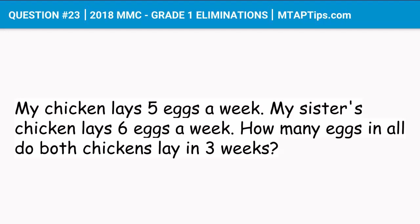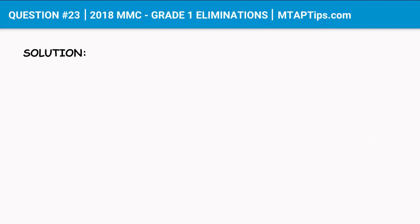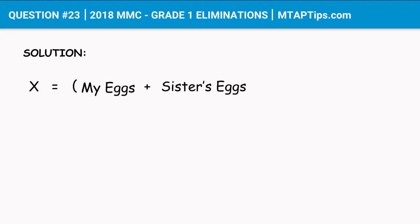Let's go ahead and try to solve this problem and put it in an equation. Let X be the unknown number, equal to the number of eggs of my chicken plus the number of eggs of my sister's chicken, times the number of weeks.